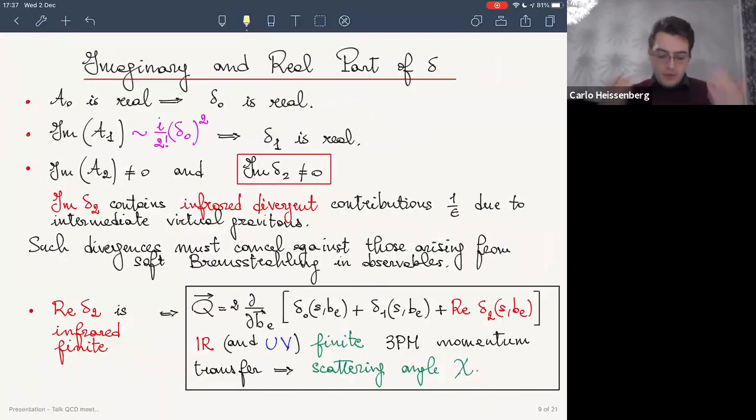Before moving to the results, there is one more subtlety that I have to mention, namely that the Eikonal delta can acquire an imaginary part. In fact, this is particularly true at two loop level where the imaginary part of the 3PM or two loop Eikonal is non-trivial and is infrared divergent. These infrared divergences are associated to the presence of intermediate virtual gravitons, which however bear an intimate connection to the emission of real soft gravitons. In that, according to Weinberg theorem, these infrared divergences are expected to cancel in any physical observable between these two effects. On the other hand, the real part of delta two is finite. The more precise prescription that we are going to adopt in order to calculate the momentum transfer would be to take the derivative of the real part of the Eikonal.